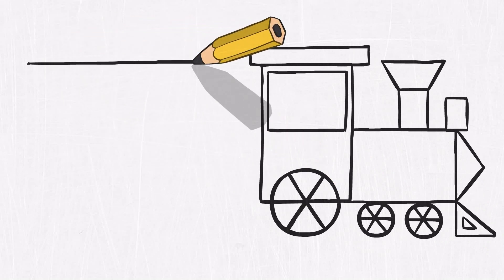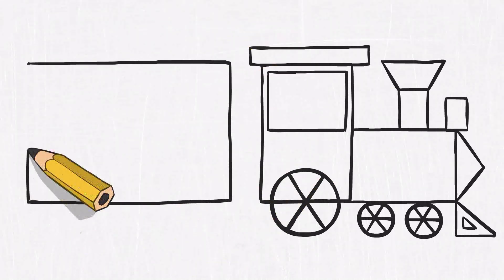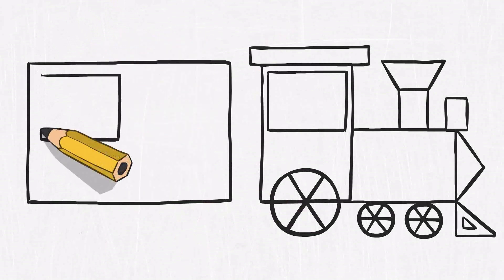And for you Alice, we draw an individual carriage. Let's draw a large rectangle and two windows.